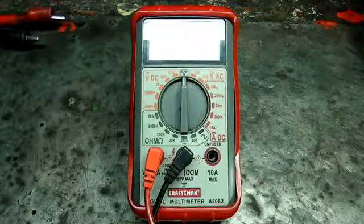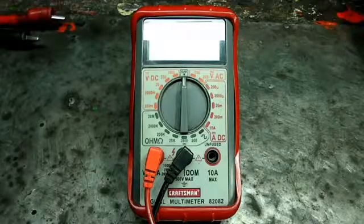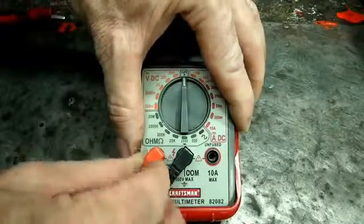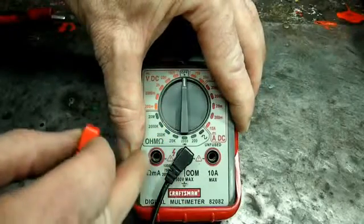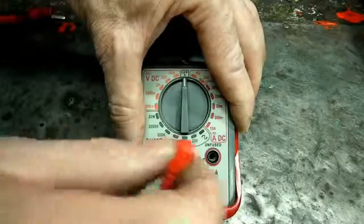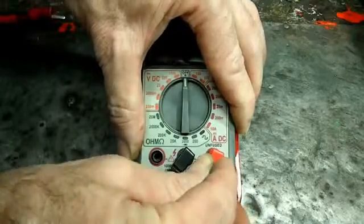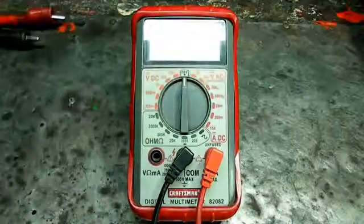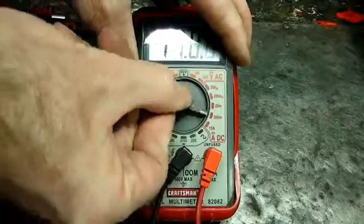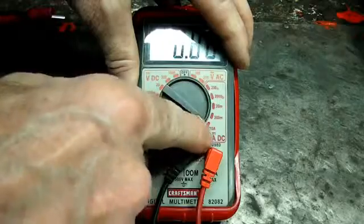Next thing we're going to do is check amperage. How much amperage a particular item is drawing. So what we have to do is take this red lead out of this side and move it over to this one right here that says 10 amps max. Now if your meter doesn't have this you cannot do this test. Then we move our scale down to 10 amps DC.